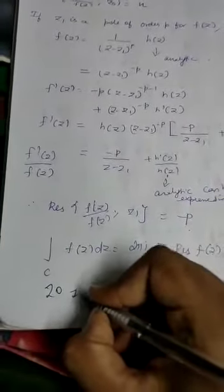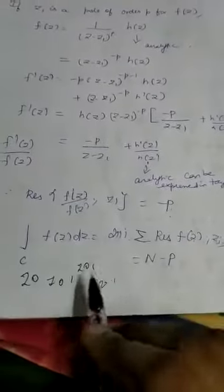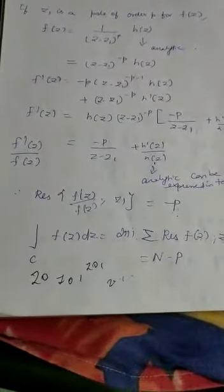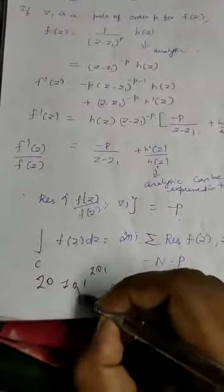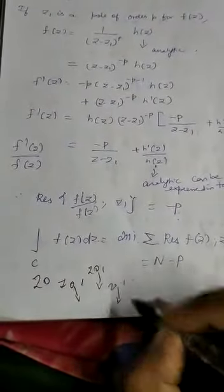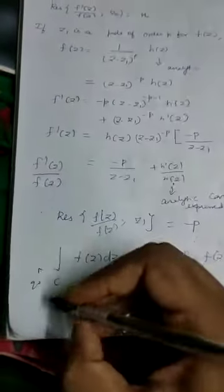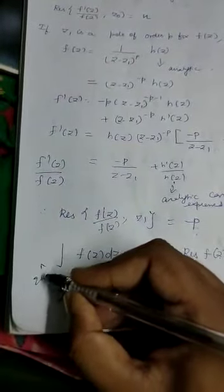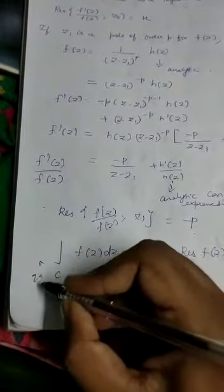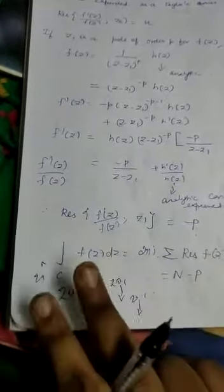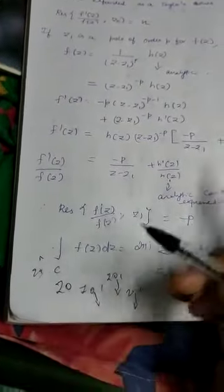If z0 is a zero of order n, we count it n times — that is, we treat it as n distinct zeros in the sum. So for all zeros, the sum of residues gives N, the total number of zeros counted with multiplicity. Similarly, for all poles, the sum gives −P, the total number of poles counted with multiplicity. Therefore, (1/2πi) times the integral equals N − P.